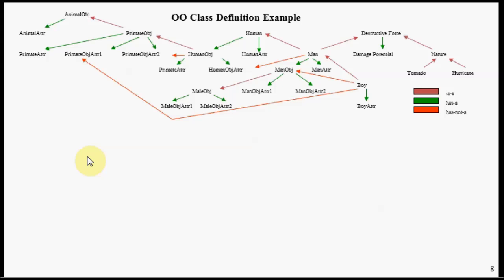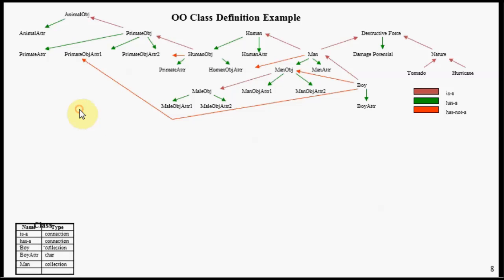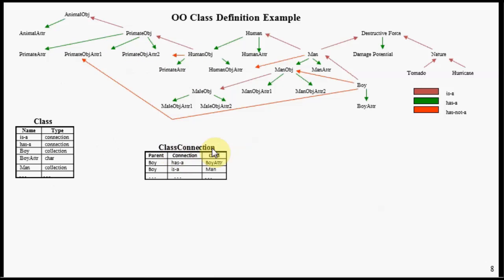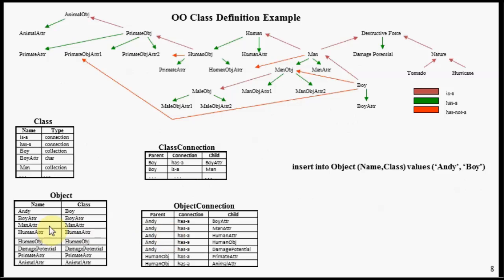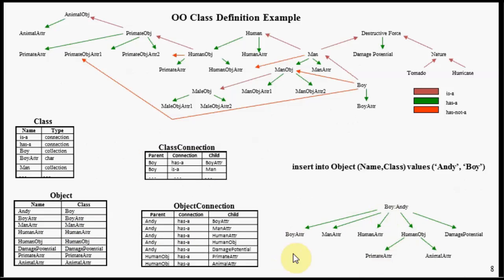With this soft schema model, let's look at an example of instantiating a class instance. We have a class graph, and all the data in this graph can be represented with two tables — a class table representing all of the nodes, and a class connection table showing all of the connections. Now let's look at what happens when we want to instantiate this particular node — a boy. We're going to call this instantiation Andy. What will happen behind the scenes is TCSQL is going to figure out all of the properties that need to be inherited, and it will populate appropriate object and object connection tables. These two tables will represent an object graph.